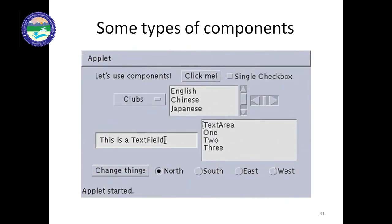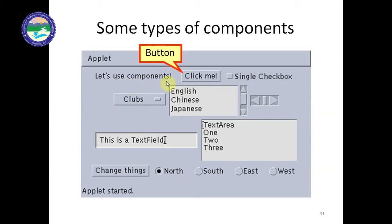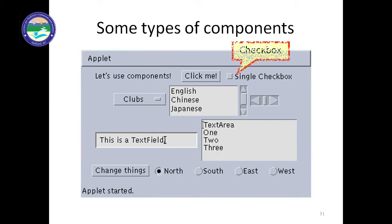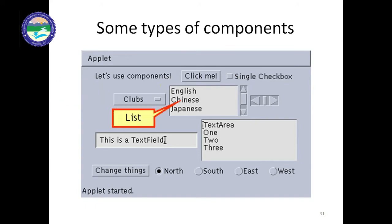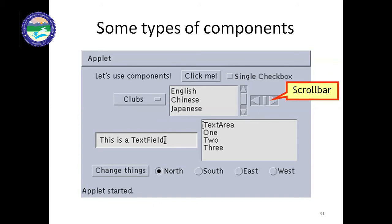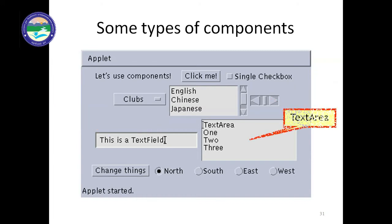Here are some components of Java AWT. First is Label. Then there is Button with a caption like 'Click Me'. There is also Checkbox, Choice button, and List — from which you can select more than one item. Additionally, there is a Scrollbar, TextField, and TextArea.